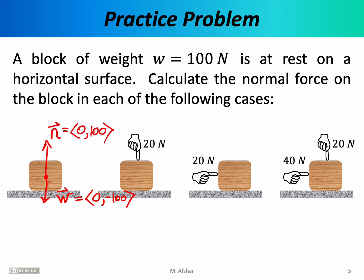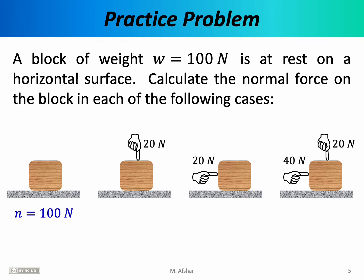The normal force N = (0, 100). Adding N to W gives a net force of zero — no acceleration, so the block remains at rest. The magnitude of the normal force is simply 100 newtons. If you wanted to be precise, N_x = 0 and N_y = +100 newtons. To calculate the magnitude of a vector, you square the x component, square the y component, add them together, and take the square root. The result is 100 newtons.